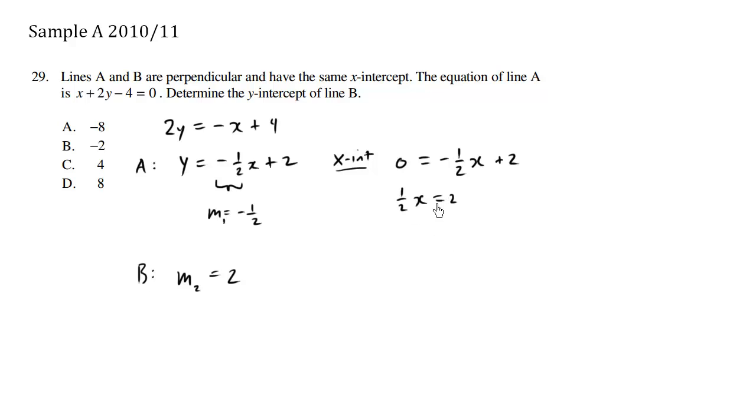I'm going to multiply both sides by 2, so x equals 4. So when x is 4, y is 0. This here is the x-intercept. So we have a point.